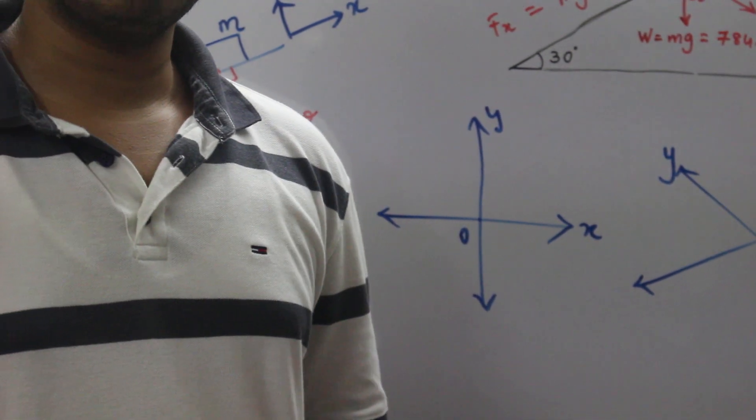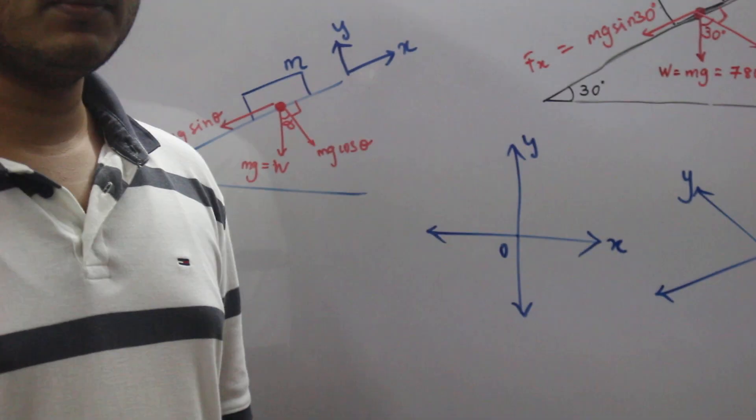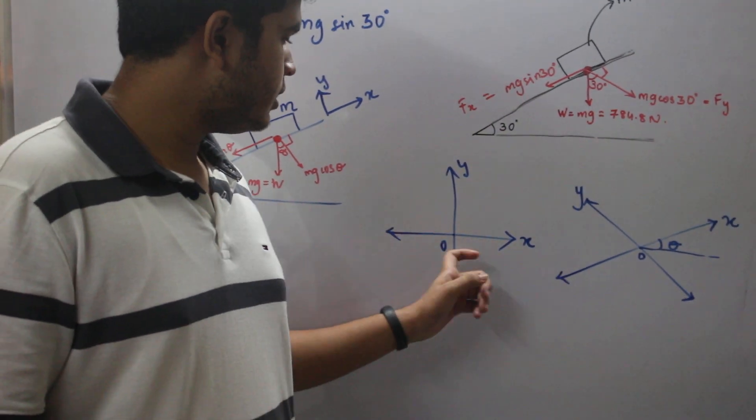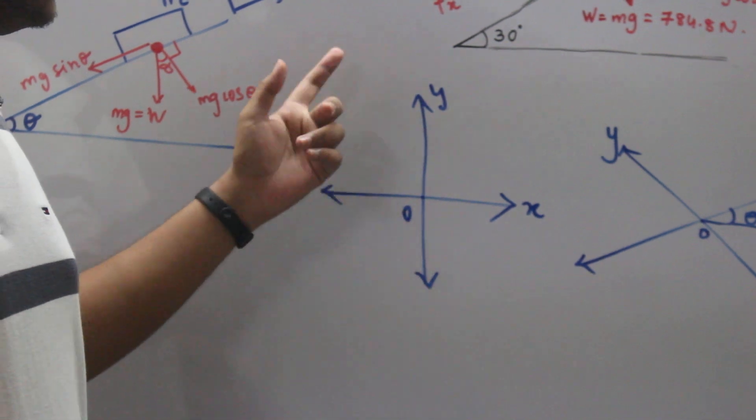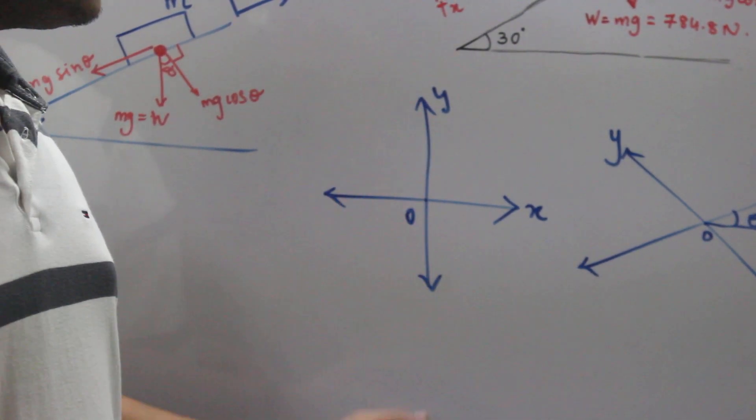So now we have seen the case of a horizontal surface. In a horizontal surface, along the surface it's considered as the x-axis and perpendicular to the surface you consider the y-axis.